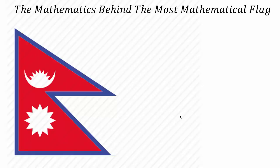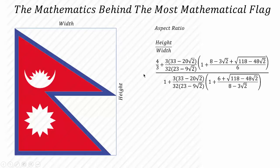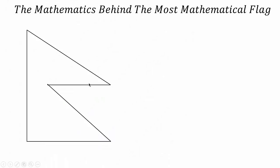Hello friends, welcome to the series video on the mathematics behind the most mathematical flag. Today we are going to discuss the aspect ratio of the flag of Nepal. The aspect ratio is the ratio of the height to the width of the flag. The flag of Nepal has an aspect ratio that is an irrational number, approximately equal to 1.219, and today we are going to find out how this aspect ratio was calculated.